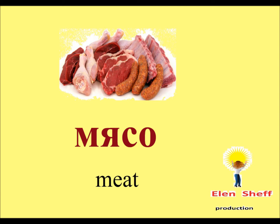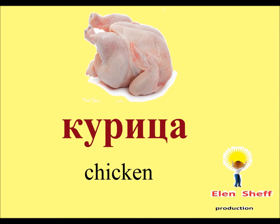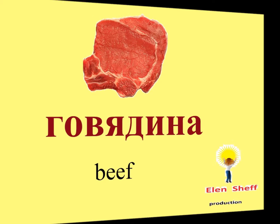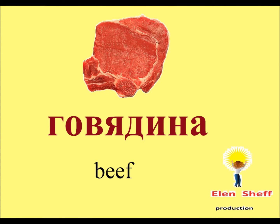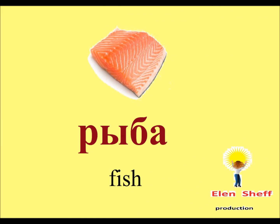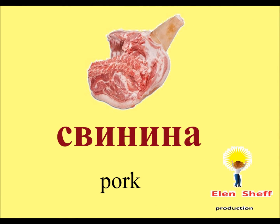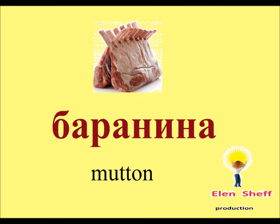Мясо. Let's look at what we call мясо. It is ку-ри-ца. Курица. Го-вя-ди-на. Говядина. Ры-ба. Рыба. Сви-ни-на. Ба-ра-ни-на. Баранина.